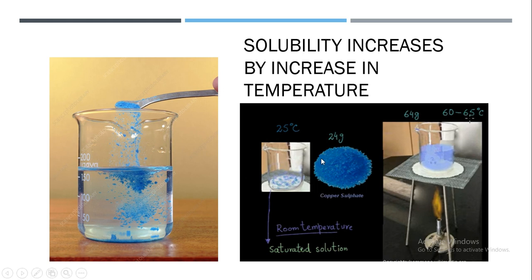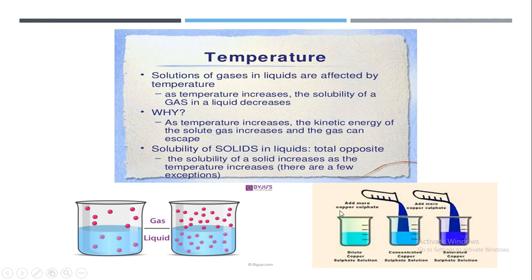Copper sulfate is a blue crystal-like chemical. We can dissolve it up to 24 grams in 100 grams of water at 25 degrees centigrade (room temperature) to make a saturated solution. But when we increase the temperature, we can dissolve up to 64 grams of copper sulfate in water. So solubility increases by increasing the temperature when the solute is solid. For gases, solubility decreases as temperature increases because as kinetic energy of the gas increases, the gas starts to escape from the solvent.